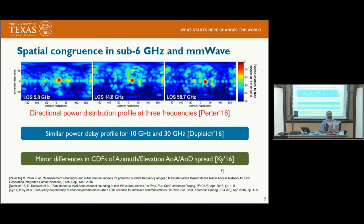All this work using sub-6 GHz information for millimeter wave systems is primarily motivated by spatial congruence — the directional power distribution as a function of frequency does not vary completely rapidly. For example, a graph shows the directional power distribution at 5.8 GHz, 14.8 GHz, and 58 GHz, and the directional pattern is very similar. The power delay profile of 10 GHz and 30 GHz was also found to be very similar, and there was very minor difference between CDFs of azimuth and elevation angle-of-arrival and angle-of-departure spreads, suggesting enough spatial similarity to use sub-6 GHz as prior information.